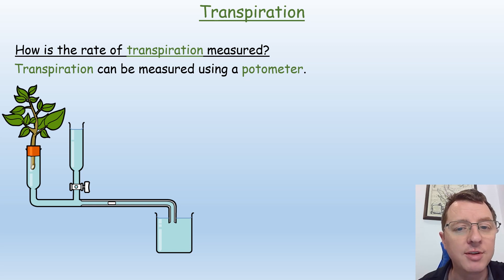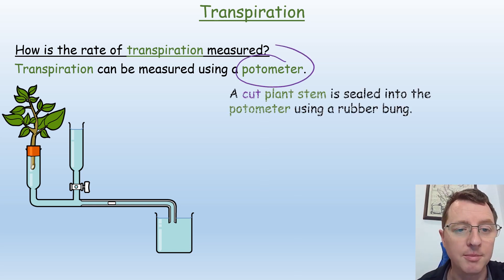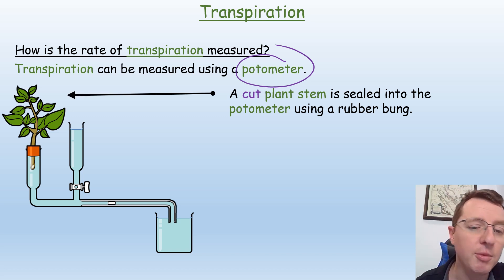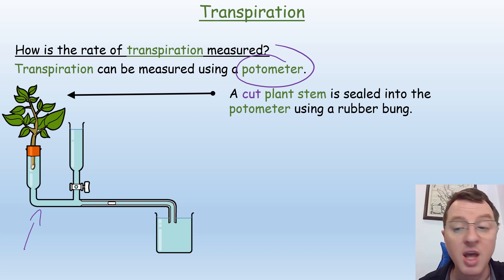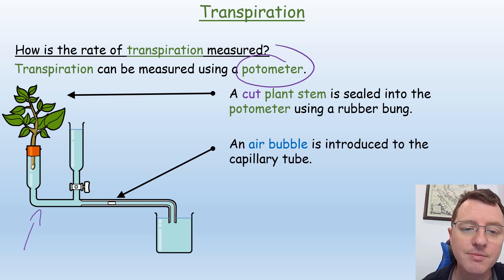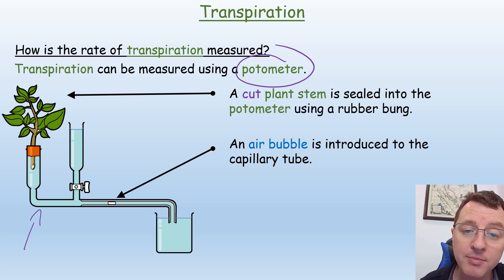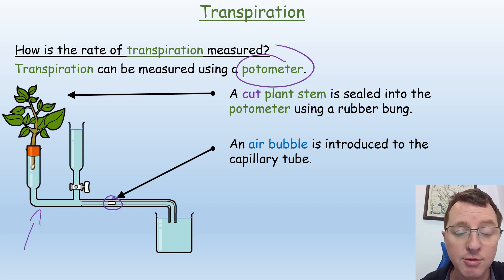In order to investigate transpiration we use a piece of equipment called a potometer. We take the potometer, cut a plant stem, and seal it into the potometer using a rubber bung. This must be done underwater so we don't accidentally introduce any air bubbles into the system. We then fill the potometer with water and deliberately introduce a single air bubble into the capillary tube.